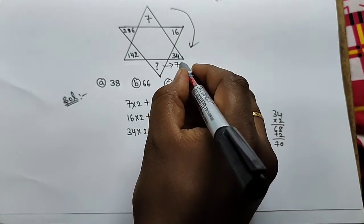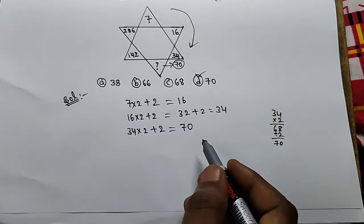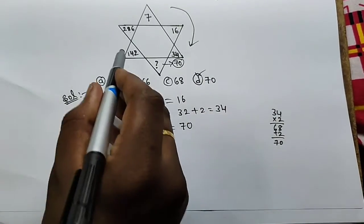So the missing number is 70. D is our option. Next, we will check this out.